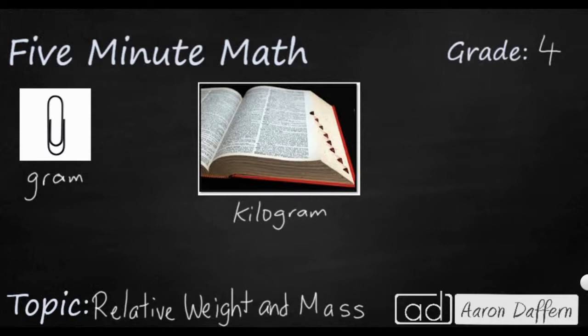So if we want to get our grams into kilograms, it takes a thousand. Thousand G equals one kg, kilogram. Because this word kilo, the prefix, means thousand. So you take a thousand grams, a thousand paper clips, and you're going to get something similar to this paper dictionary.